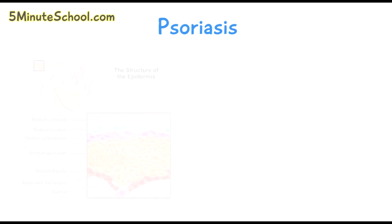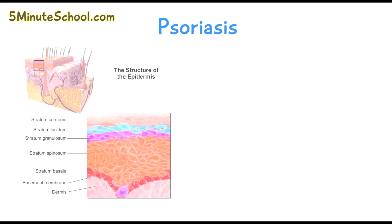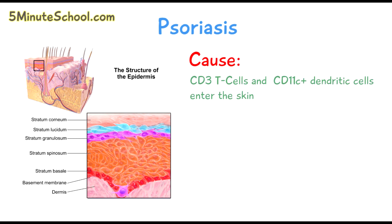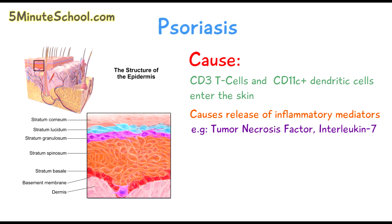Let's talk about how psoriasis actually occurs. The main cause is due to infiltration of CD3 T-cells and CD11C-plus dendritic cells into the skin. These cells are part of the immune system. Once these cells go inside the skin, it causes the release of pro-inflammatory mediators — certain molecules which cause inflammation in the skin — such as tumor necrosis factor and interleukin 17.